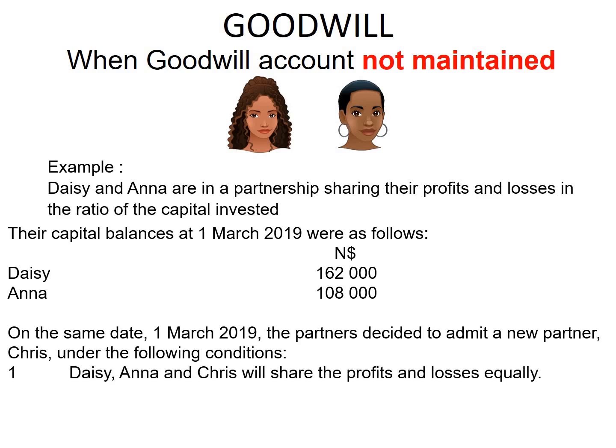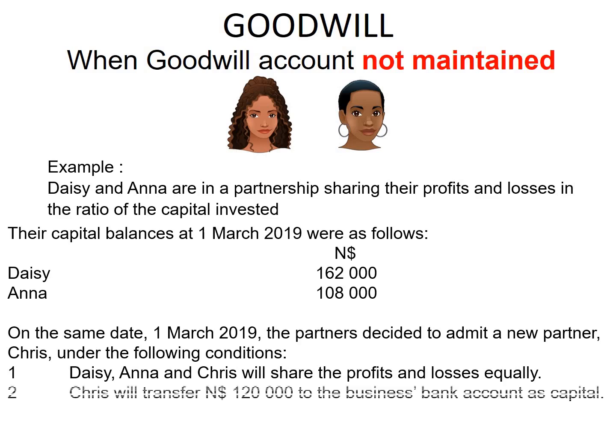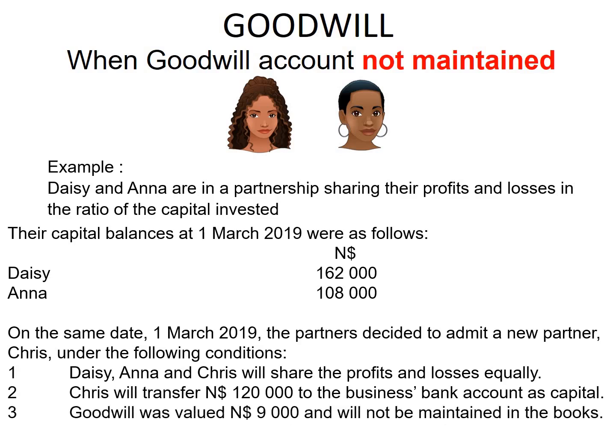Number 1: Daisy, Anna, and Chris will share the profits and losses equally. Number 2: Chris will transfer $120,000 to the business's bank account as capital. And number 3: Goodwill was valued at $9,000 and will not be maintained in the books.